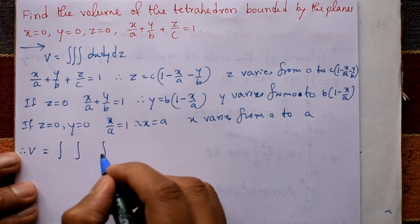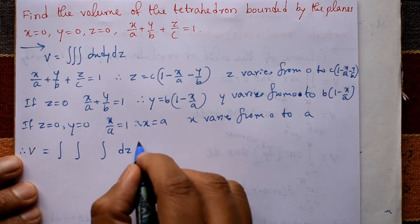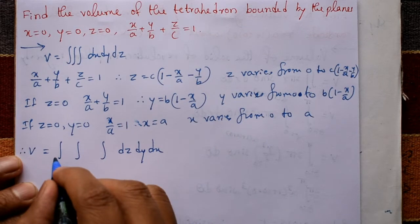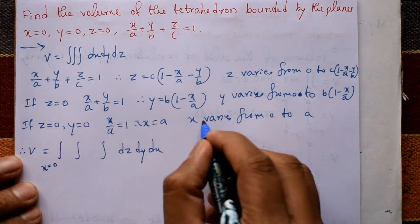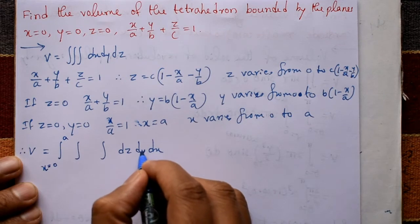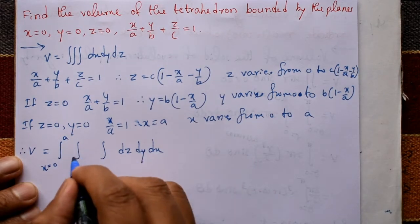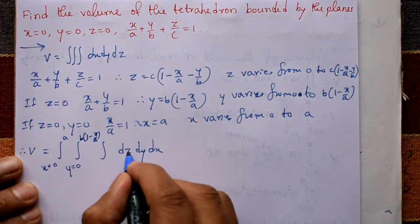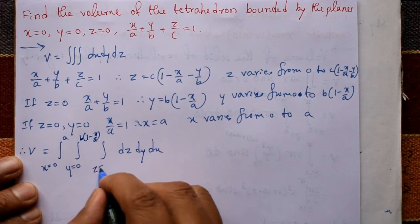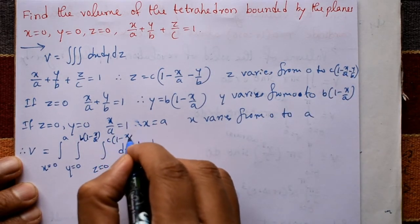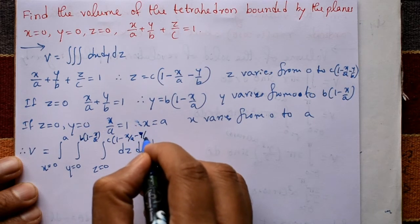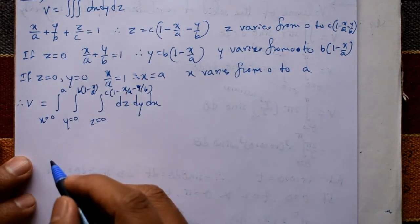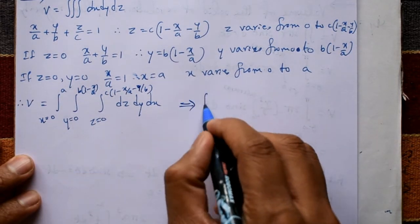Therefore V equals the triple integral: x from 0 to a, y from 0 to b(1 - x/a), z from 0 to c(1 - x/a - y/b), of dz dy dx. We integrate one by one, first with respect to z.